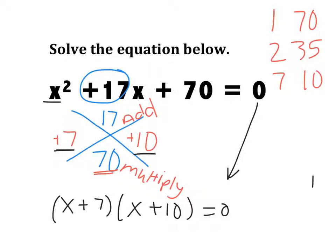Now, why would I do that? Well, now I can say, using that zero product method, that x plus 7 equals 0 and x plus 10 equals 0. And I can solve those two small equations to get the solutions negative 7 and negative 10.